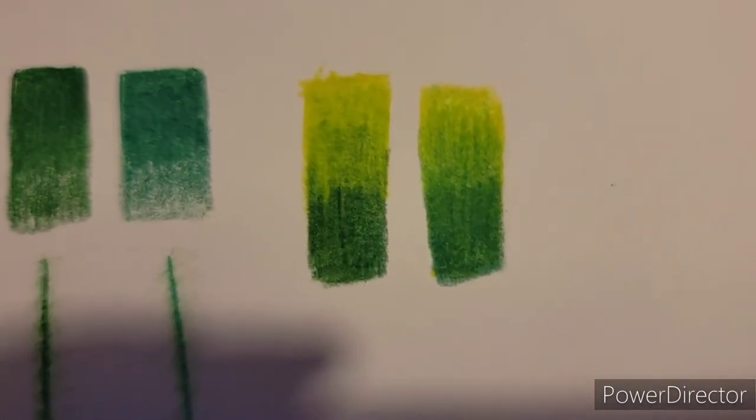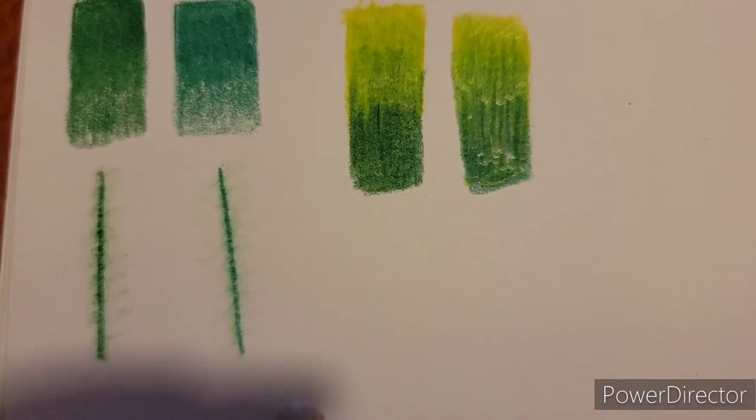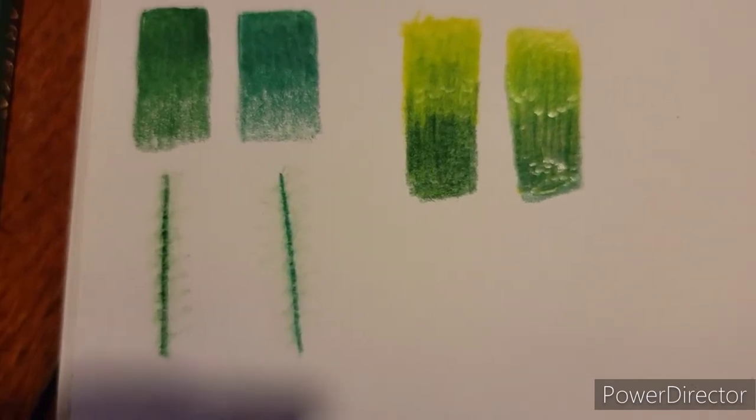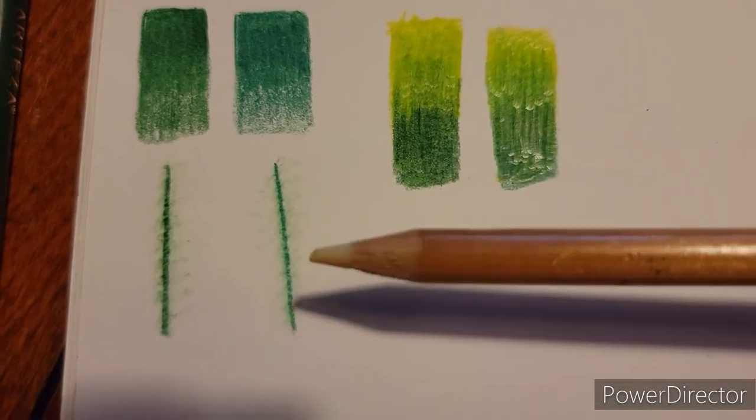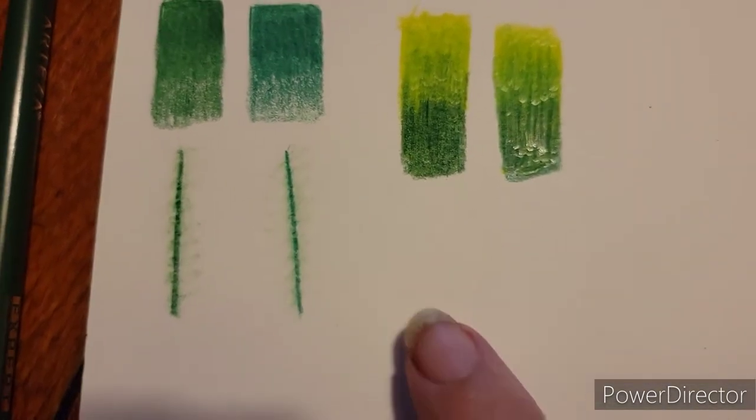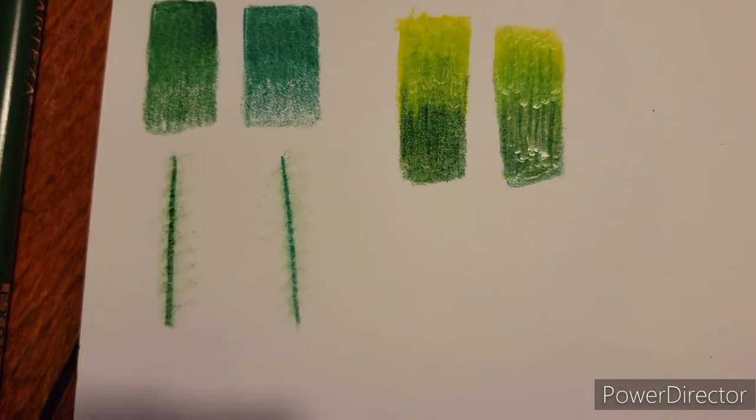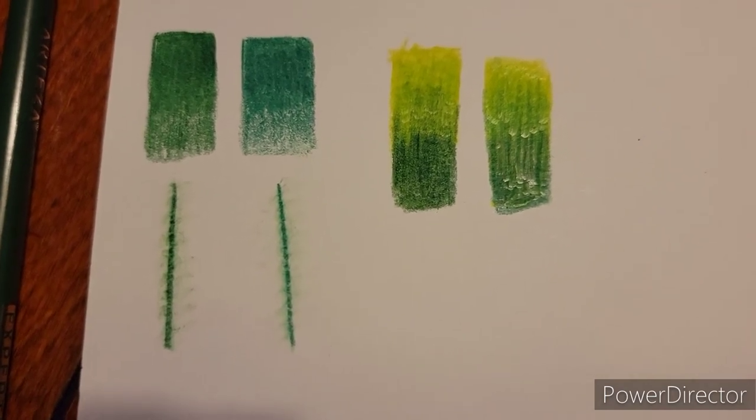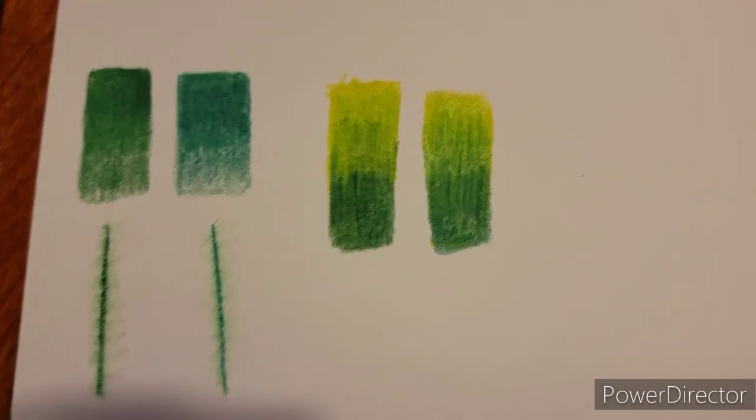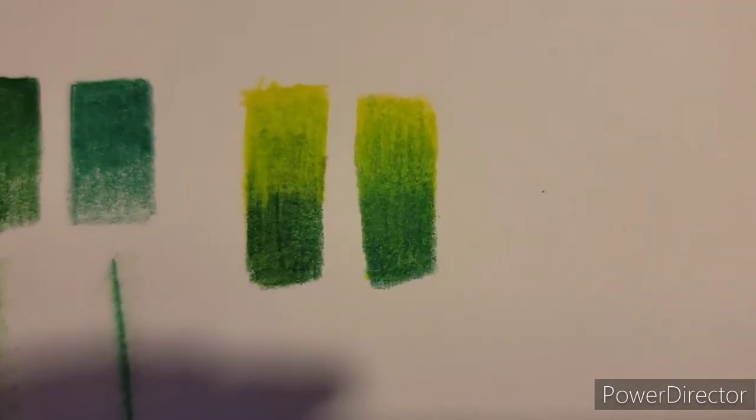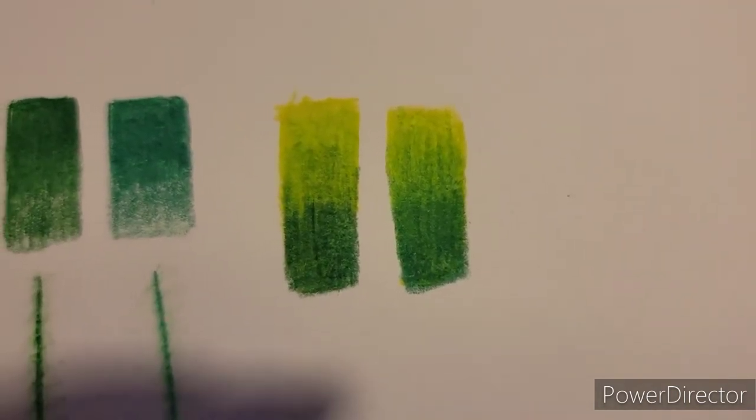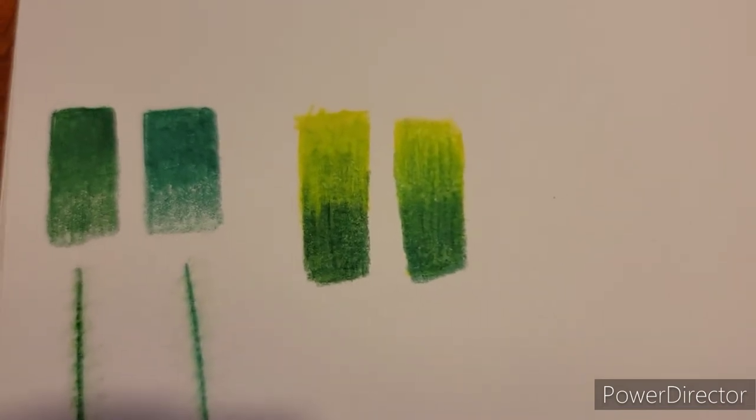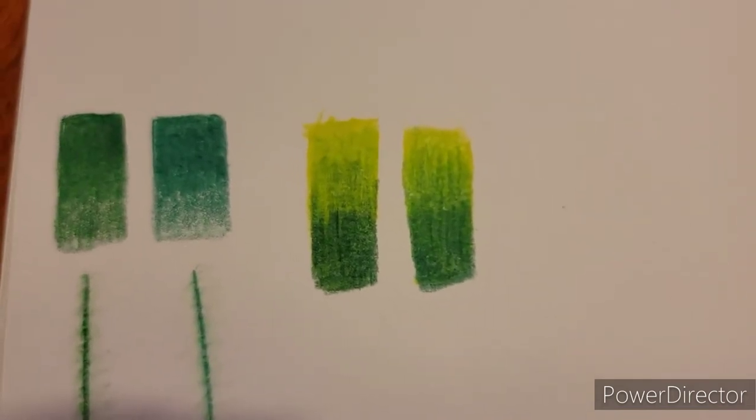Anyway here is also I did the colorless blender here and I feel like this Arteza is a little more apt to kind of blend out with the colorless blender than the Prismacolor was. However here we go blending Prismacolor on the right, I feel like that went on a lot smoother and I feel like it blended a little easier, less layering.